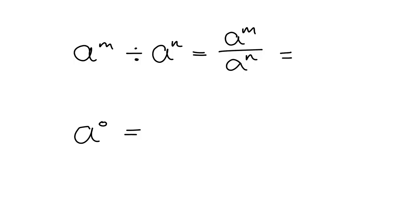Let's summarize the two new exponential rules in our homework books. If you have a to the m divided by a to the n, we can write it as a fraction. You've got m of these a's multiplied together at the top, n of them at the bottom, so the n a's cancel with n of them from the top, and what you're left with are just m minus n of them. And then we also saw that for everything to make sense, a to the 0 has to be equal to 1, except in the case where a is itself 0, in which case it's undefined.